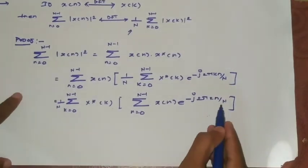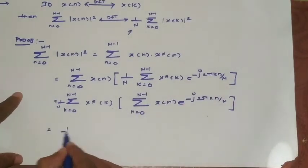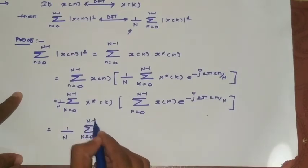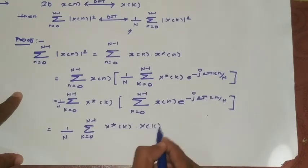Observe this term—this is nothing but the discrete Fourier transform. So this becomes 1/N times the summation from 0 to N-1 of X*(k)·X(k).